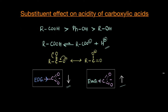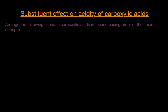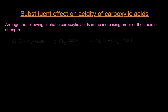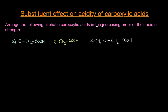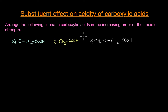Based on this, let's solve a couple of questions. The first question is to arrange the following aliphatic carboxylic acids in increasing order of their acidic strength. The acids we have are chloroacetic acid, acetic acid, and methoxyacetic acid. To solve this, the first thing is to look at their conjugate bases and see which among them would be more stable. So let's remove the H and replace it with a negative charge to get our conjugate bases.